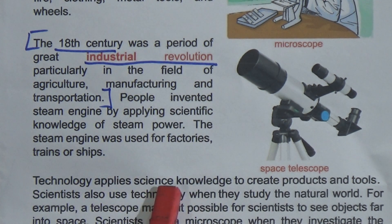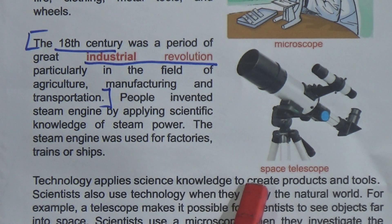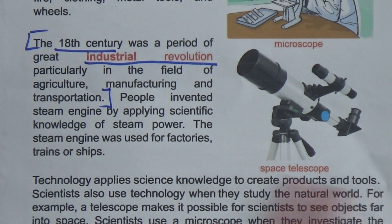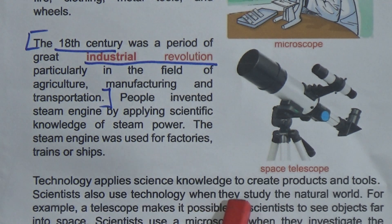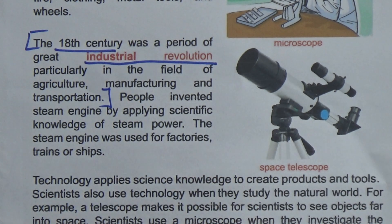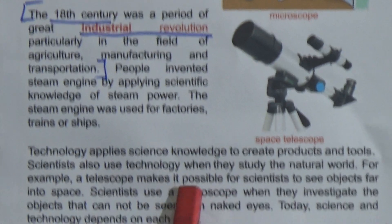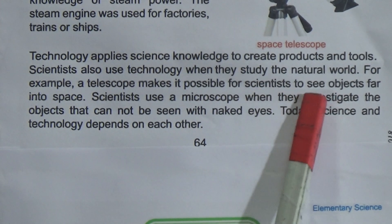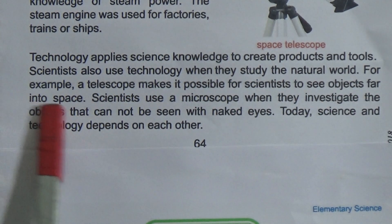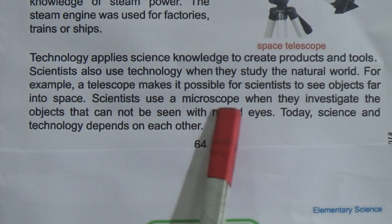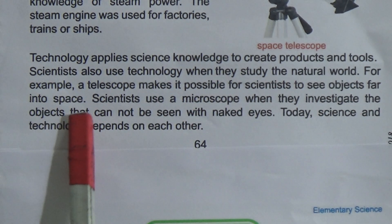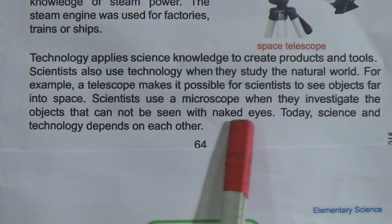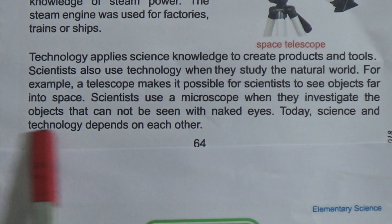Technology applies scientific knowledge to create products and tools. Scientists also use technology when they study the natural world. For example, a telescope makes it possible for scientists to see objects far into space. Scientists use a microscope when they investigate objects that cannot be seen with the naked eye. Today, science and technology depend on each other.